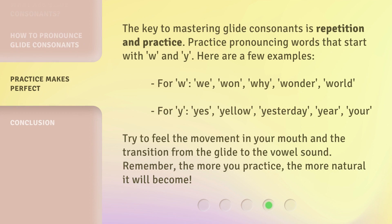The key to mastering glide consonants is repetition and practice. Practice pronouncing words that start with W and Y. Here are a few examples. Try to feel the movement in your mouth and the transition from the glide to the vowel sound. Remember, the more you practice, the more natural it will become.